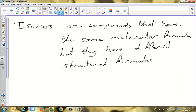Hi, in this video we are going to define what I mean by isomers and we are going to practice on drawing some isomers. First, I'm showing you the definition for isomers. Isomers are compounds that have the same molecular formula but they have different structural formulas. So it means that they have the same number of atoms, same type of atoms, but different arrangements.